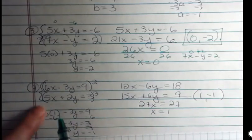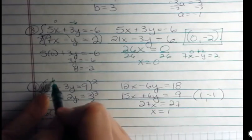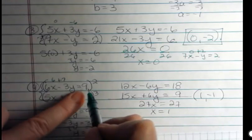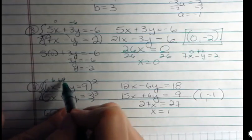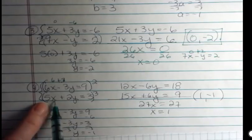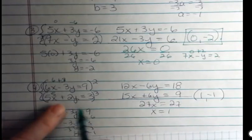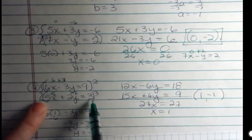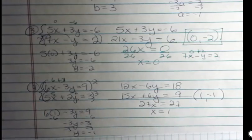I could quickly do a check. 6 times 1 is 6. Negative 3 times negative 1 is positive 3. And that equals 9. That's a 3. And then over here, 5 times 1 is 5. And 2 times negative 1 is negative 2. 5 plus negative 2 is 3. It works for both equations.